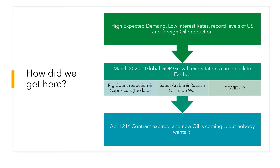On top of all of this, we had COVID-19, the coronavirus global pandemic, which is set to reduce demand for oil by over 30 million barrels a day. When everything came together it was almost too little too late. And finally, why did it happen today specifically? The April 21st contract expires tomorrow, and everyone realized there's going to be a whole bunch of new oil coming — but nobody wants it.